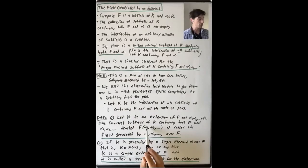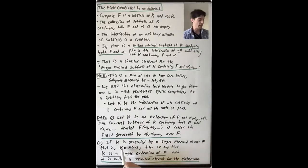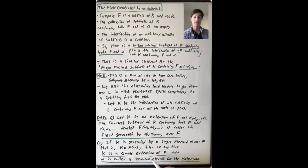In the case that your arbitrary collection of elements is just one element alpha, we get some more terminology. If K is generated by a single element alpha over F — that means K equals F adjoin alpha — then we say that K is a simple extension of F, and this alpha gets a special name: alpha is called a primitive element of this extension. This idea of a simple extension and a primitive element is going to be really important going forward, because many of the field extensions that we consider will be described in this way.